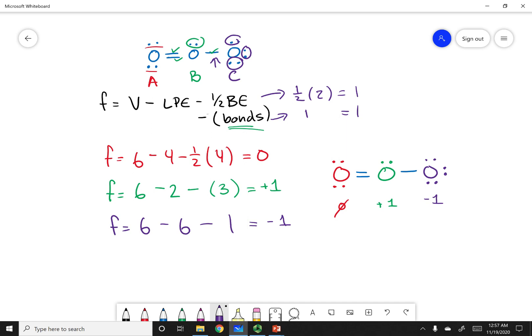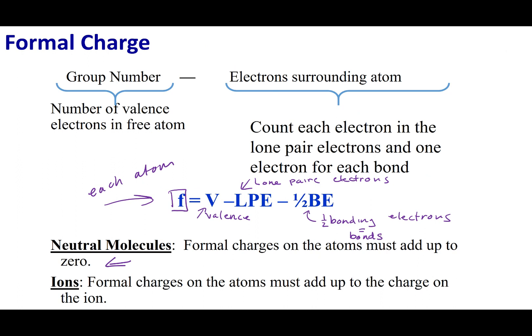If something has a formal charge of minus one, it tends to be a little negative; if plus one, it tends to be a little positive. Also note: if you add up all the formal charges — zero plus one plus negative one — you get a total charge of zero. If the molecule is neutral, the sum of formal charges equals zero. If the molecule is charged, the sum equals that charge. This is a good way to check your calculation.